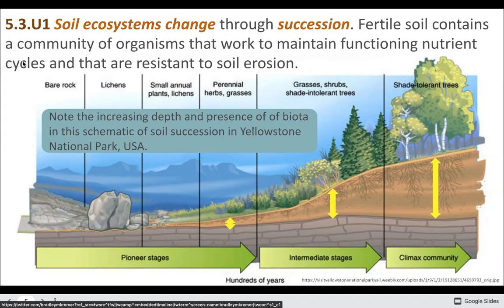Fertile soil has a total community of organisms. Soil itself is a full ecosystem with biotic and abiotic factors. You can see the stages of succession with lichens and annual plants that grow and die every year, versus perennial herbs that live for multiple years and flower multiple times, and eventually more long-term trees, ending with a climax community.